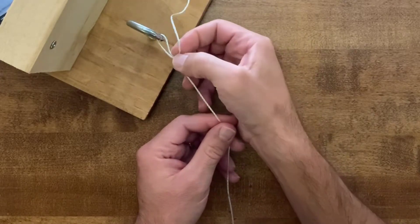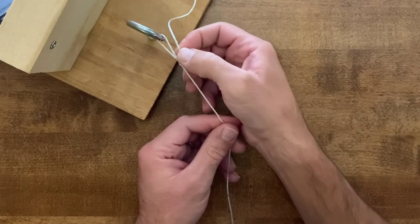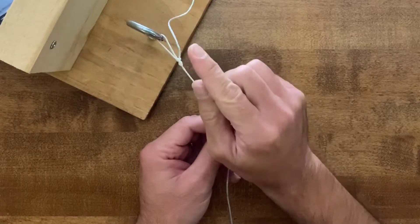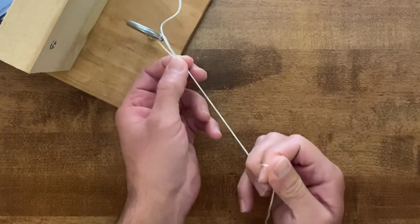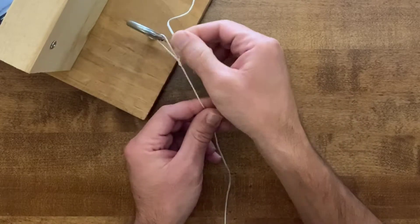Of course you want to clip it off fairly close here to the knot, but even the little tag that's going to be left is going to be pointing back toward the lure, which is a really nice feature of this non-slip loop knot.